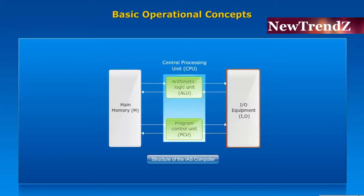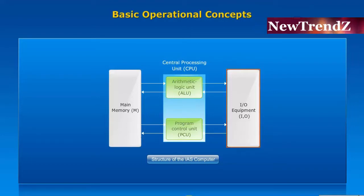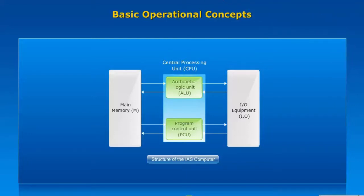The input module is used to feed the program into the computer system. It contains basic components for accepting data and instructions in some form and converting them into internal signals usable by the system. A means of reporting results is the output module. I/O modules are operated by the control unit.